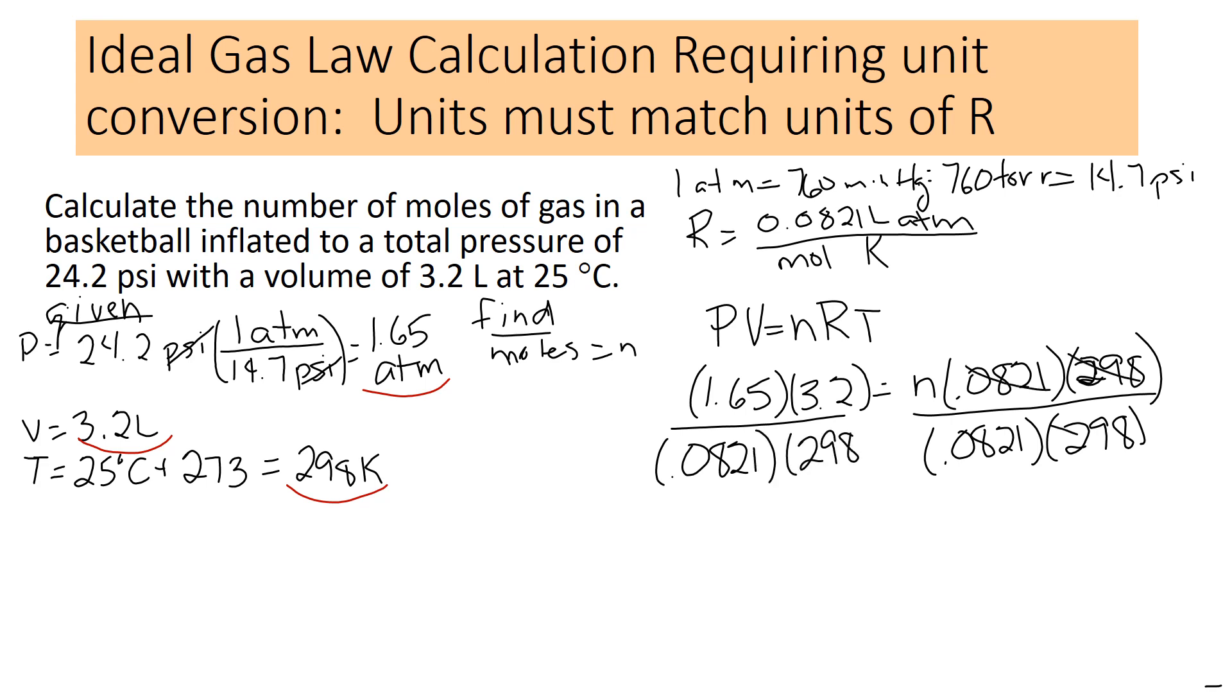These guys all cancel, and now I go to my calculator. 1.65 times 3.2 divided by 0.0821 divided by 298 equals, and then in this case, I'm going to use two sig figs because my volume only has two, and so my answer's going to round to 0.22. The unit is moles, and that's my answer.